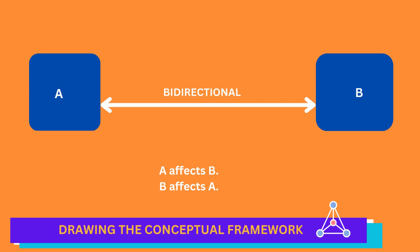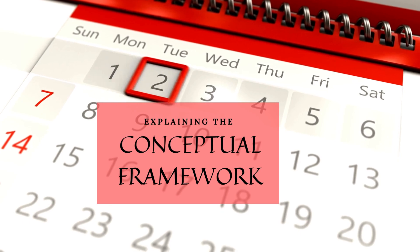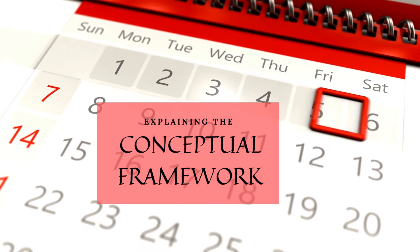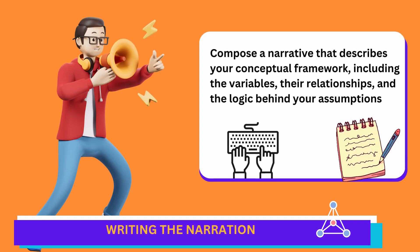Bidirectional arrows represent a reciprocal relationship in which both variables influence one another. Finally, compose a narrative that describes your conceptual framework, including the variables, their relationships, and the logic behind your assumptions.